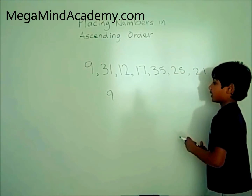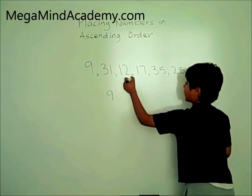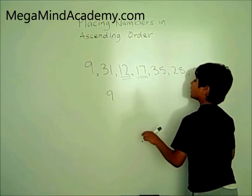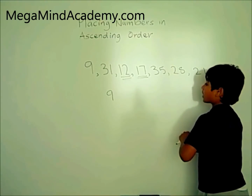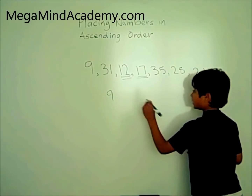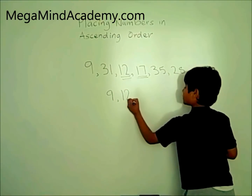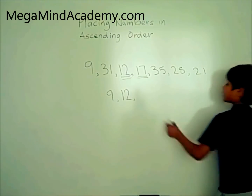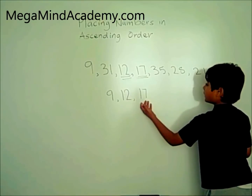Now that we covered the numbers which are smaller than 10, let's look at the numbers which are smaller than 20. The numbers which are smaller than 20 are 12 and 17. 12 is the closest higher number to 9; there are no other numbers between 9 and 12 in the set of numbers. So we put 12 after 9. That leaves us with 17, the only other number smaller than 20. So let's put 17 down here.